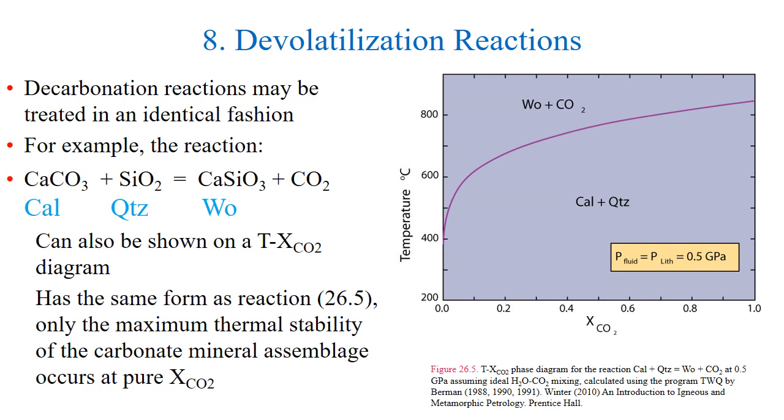Decarbonation reactions can be treated in an identical fashion. For example, the reaction of calcite plus quartz equaling wollastonite, or equation 26.26 in your book, can also be shown on the T-CO2 composition diagram. The temperature of the wollastonite isograd is based on this reaction and obviously depends upon the pressure of the carbon dioxide in the same way the previous example depended on the pressure of the H2O. The reaction has the same form as reaction 26.5 only the maximum thermal stability of the carbonate mineral assemblage occurs at the pure CO2.